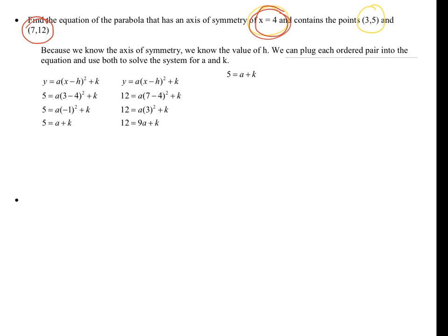Alright, now I'm going to do this using substitution. So we'll take the first one, 5 equals a plus k, and then we'll rearrange it so that k equals 5 minus a. Get k by itself. And then I'm going to take k from this linear equation and plug it into the other linear equation, which was 12 equals 9a plus k. So now we're going to combine like terms. So 12 equals 8a plus 5, and then come up here. Subtract 5, 7 equals 8a, a equals 7 eighths.